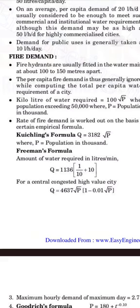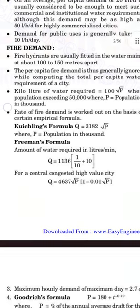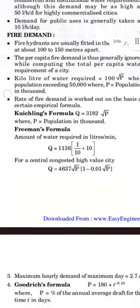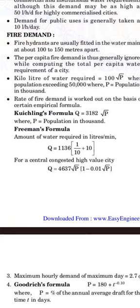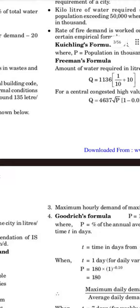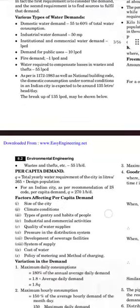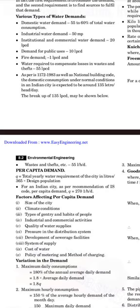The first formula is Quichling's formula: Q = 3142 × √P, where P is the population in thousands. The next is Freeman's formula: the amount of water required in liters per minute is Q = 1136 × √(1/10 + 10). For a central congested high-value city, the formula is Q = 4637 × √P × (1 − 0.01 × √P). Wastage and thefts are accounted at 55 liters per head per day.